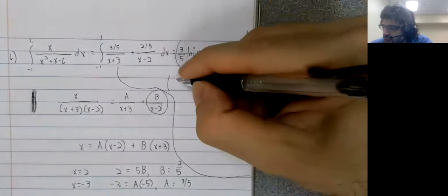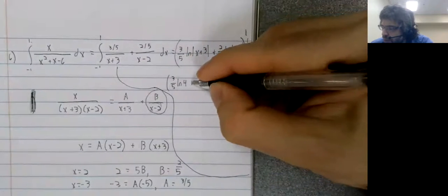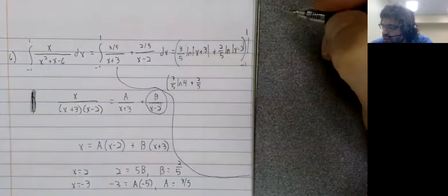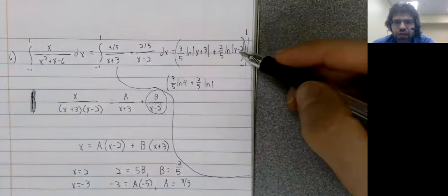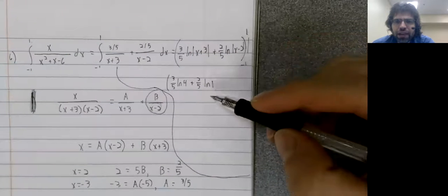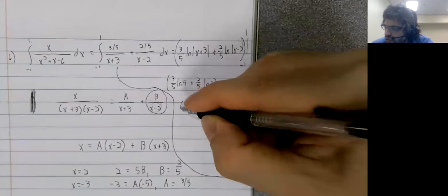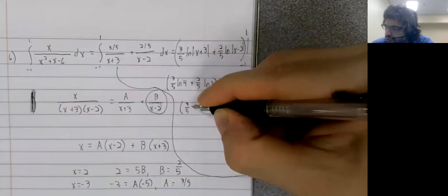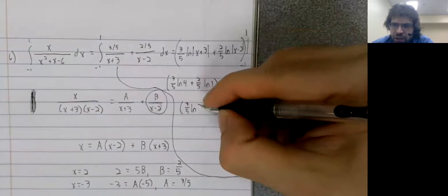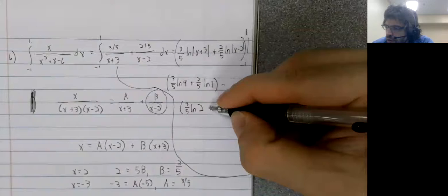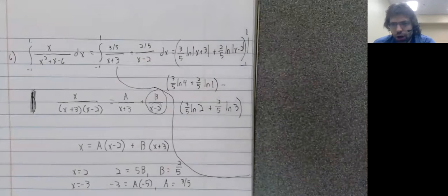We stick, we get three fifths, the log of four plus two fifths the log of one. One minus two is negative one, but then we've got these absolute values, and that becomes positive one. Minus three fifths the log of negative one plus three, and the log of two plus two fifths.